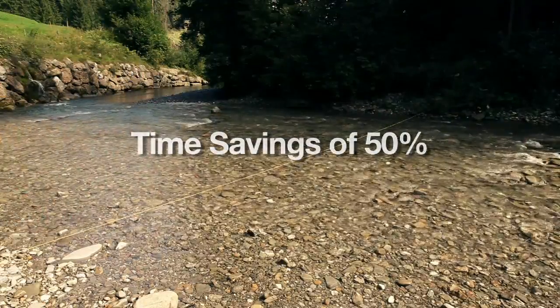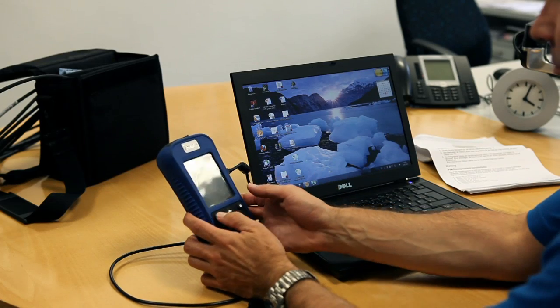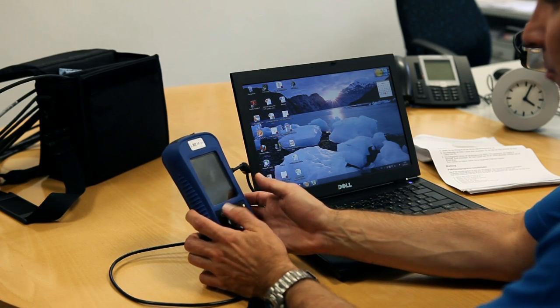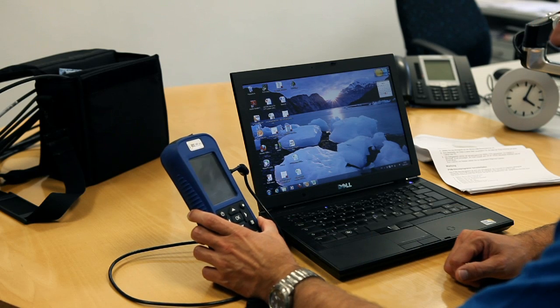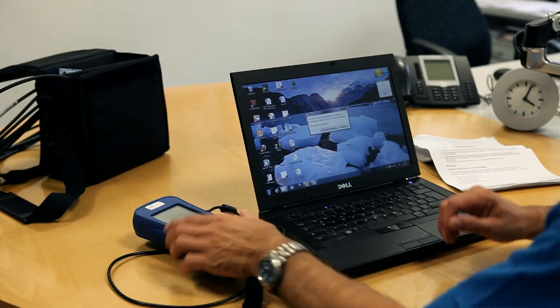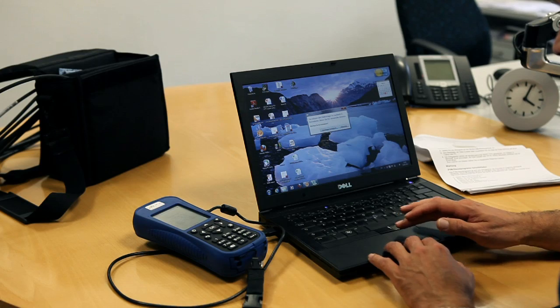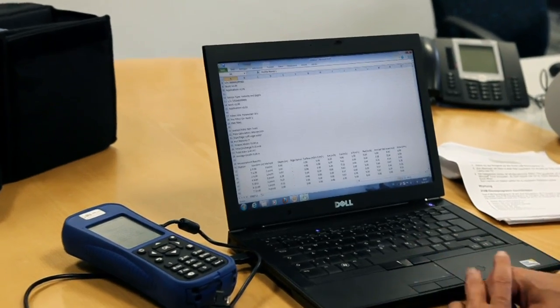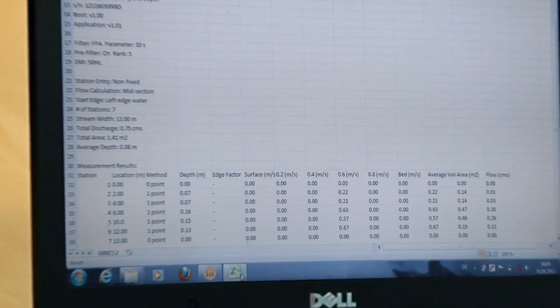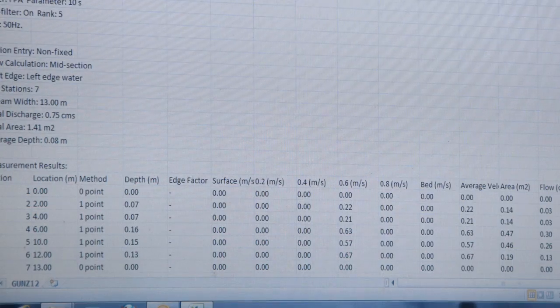But the MF Pro doesn't just save time when measuring. Things go faster back at your desk as well. There is no need for calculations after the measurement. The MF Pro automatically carries out the flow calculations according to international standards. The data can be transferred to a PC and further processed there without any problems.